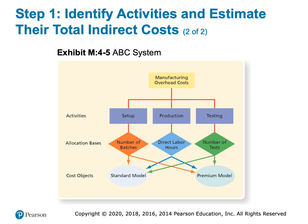Here we can see we've identified three activities — setup, production, and testing — and we've identified an allocation base for each. Setup is allocated based on number of batches, production is based on direct labor hours, and testing is based on number of tests. Since we have three activities, we will compute three rates, and then we will allocate each of those three rates to the two products. Instead of having one rate and allocating to our products, we're now going to have three rates that we allocate to each product.